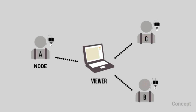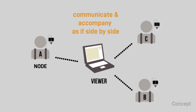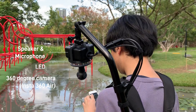T-Lib is a package of telepresence system connecting one person with multiple clients for remote interactions. It is comprised of a speaker and microphone, an LED band, and a 360-degree camera.